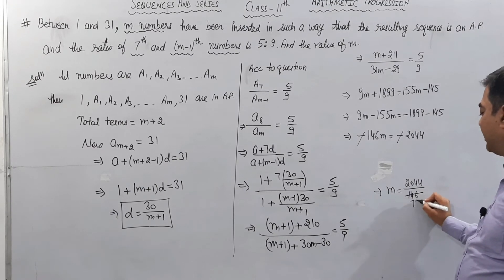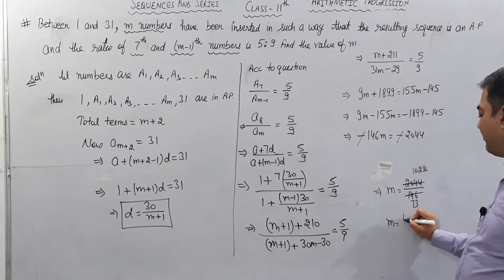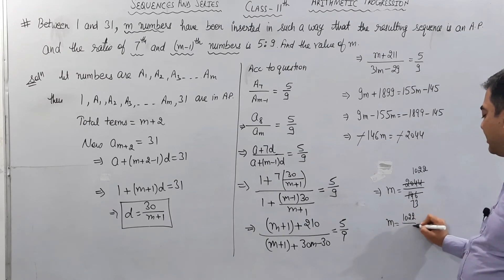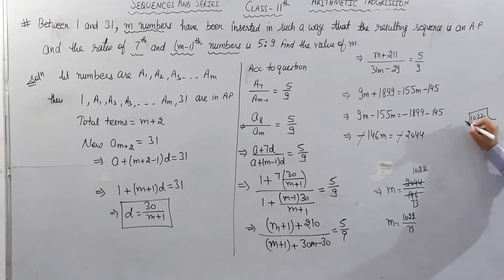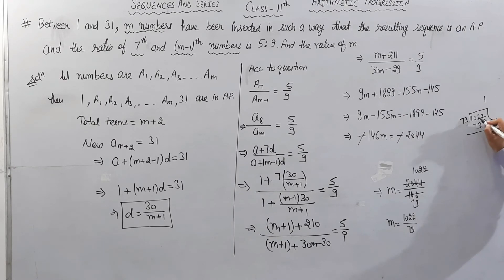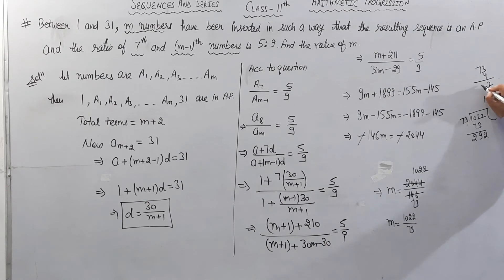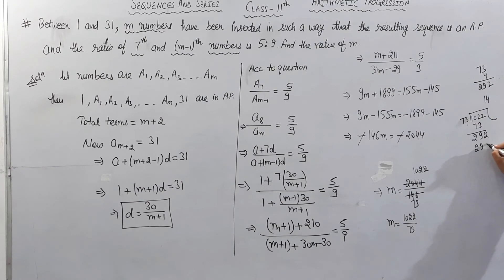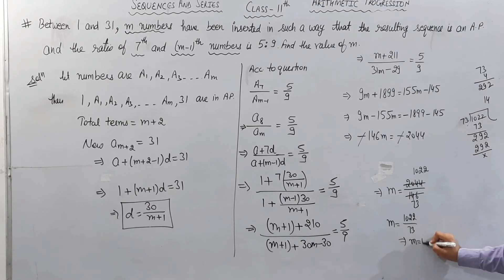Cancel out by 2, we get 1022 upon 73. Now 73 is a prime number. I will check by divide. 73 into 1022: 73 times 1 is 73. 102 minus 73 equals 29. Bring down 2, making 292. 73 times 4 equals 292. This is completely divisible by 73. Then we get m equals 14.